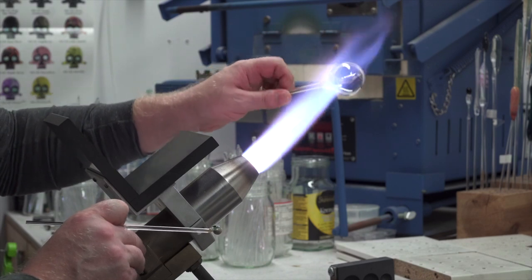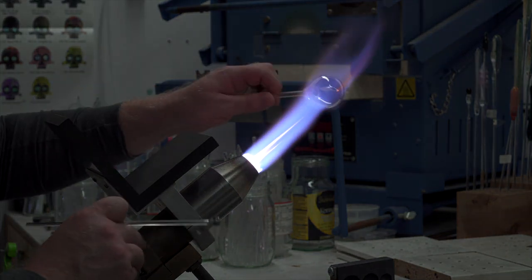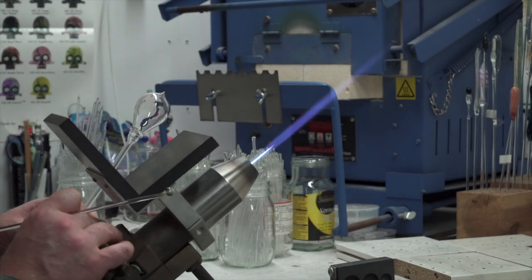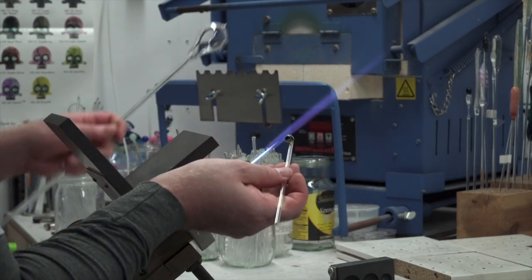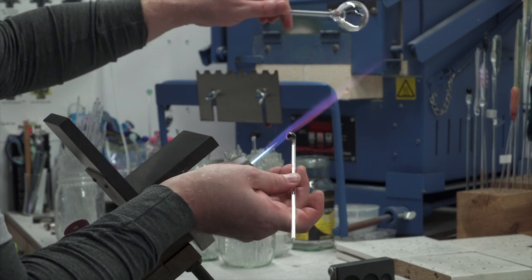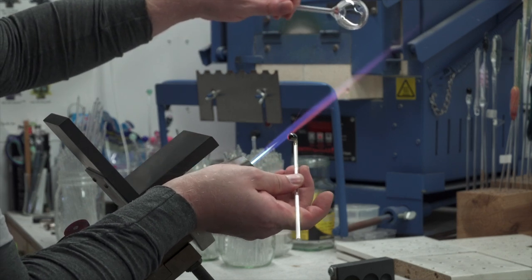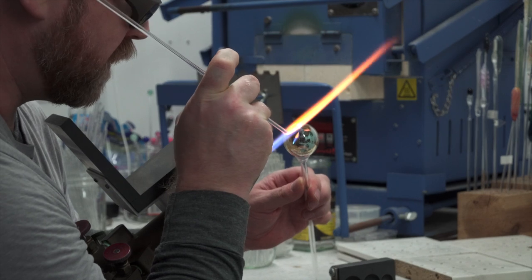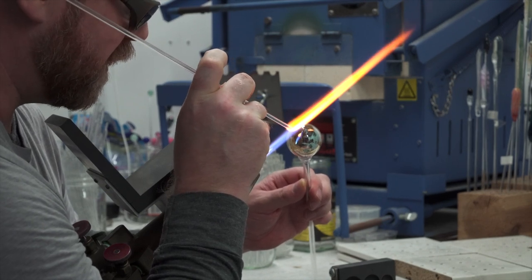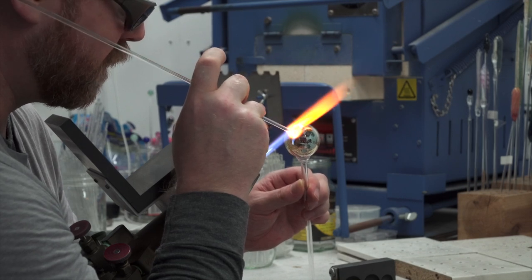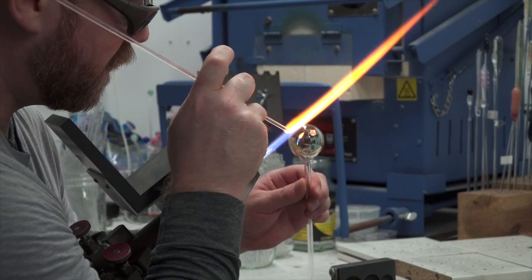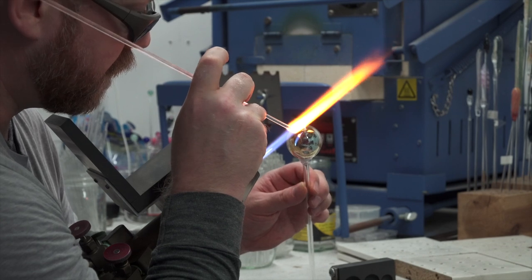Then he warms the glass back up. You have to work at higher temperatures for borosilicate glass and uses fine silver, which is 99.99% silver, and fumes the silver onto the glass. Then he traps that silver fumed part with clear dots. So he's using a clear glass rod and melting dots on there, which will later trap the silver into the glass.